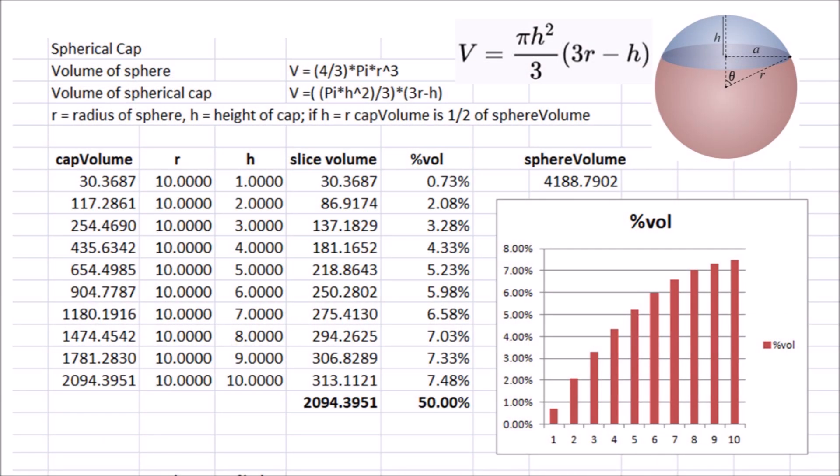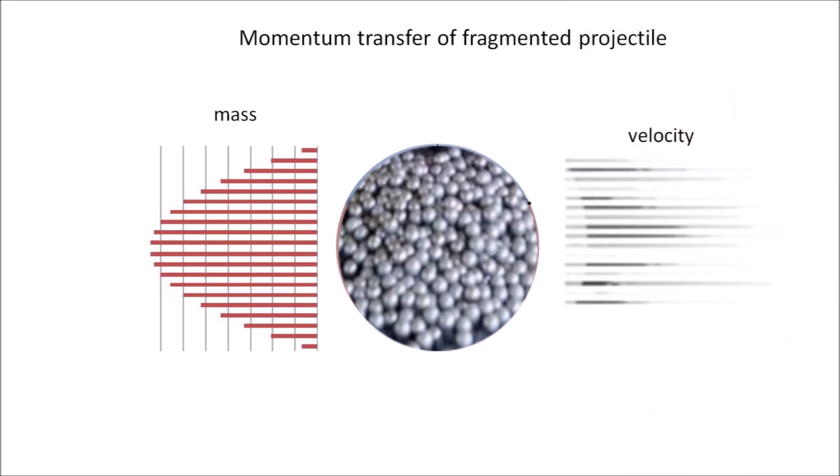I wanted to know how momentum is transferred by a fragmented spherical projectile. I calculated the volume of 1-meter slices of a sphere with a diameter of 20 meters. The weight of each slice is obtained by multiplying the volume by the density of ice, which is 917 kilograms per cubic meter. The graph shows the percentage of total volume for each slice; as expected, the greatest volume and weight are along the center of the sphere. The calculation of conservation of momentum must take into consideration the effect of this mass distribution on the target material.